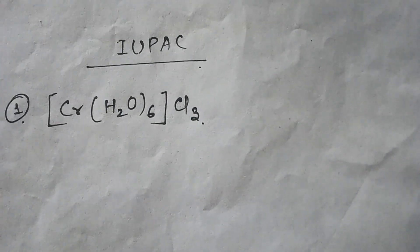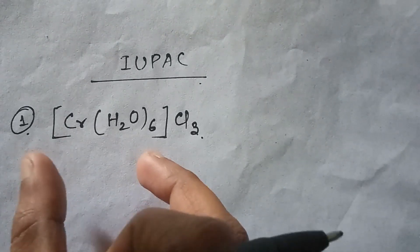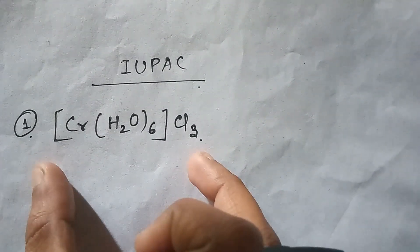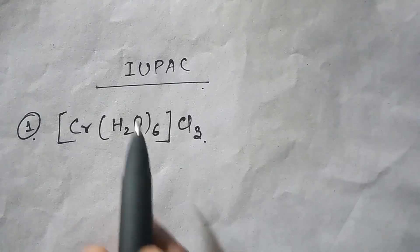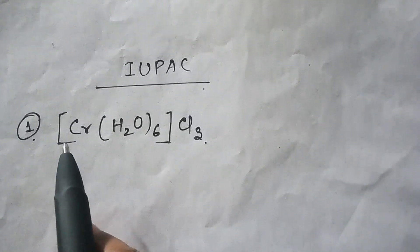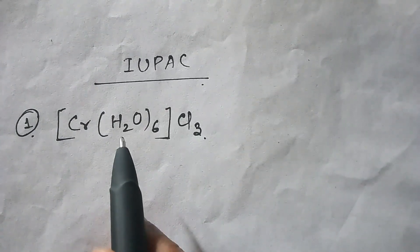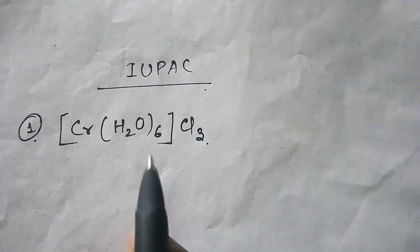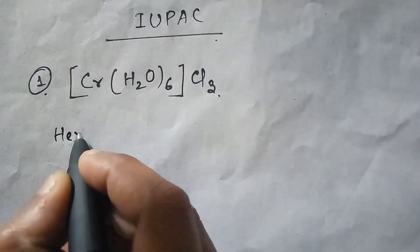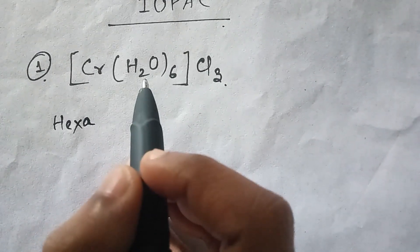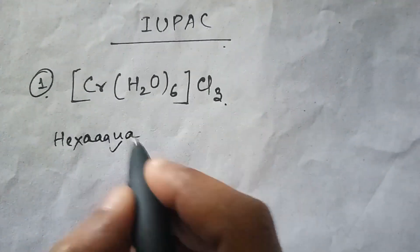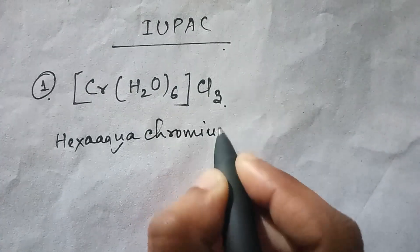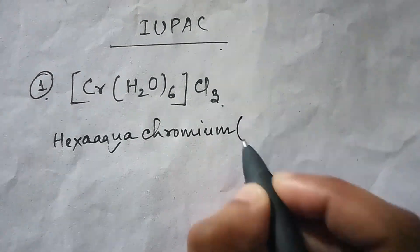Whenever we find the IUPAC name, our first task is to write the coordination sphere part. Within this part, the ligand and metal atom are present. First, write the number of ligands — here the ligand is H₂O and 6 are present, so we write 'hexa'. H₂O is written as 'aqua', and this is chromium, so we write 'hexaaquachromium'.